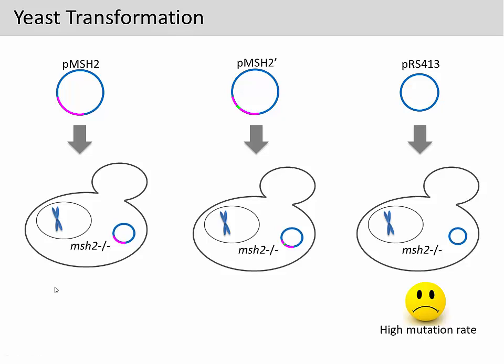On the other hand, if you introduce a functional MSH2 gene into the yeast, it should restore the mismatch repair mechanism and lower the mutation rate. Now the question is: what's going to happen if we introduce a mutated version of the MSH2? Will this restore the mismatch repair mechanism, or will the mutation rate remain high?